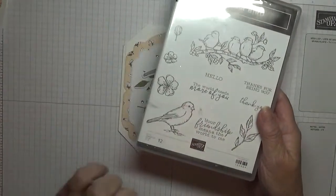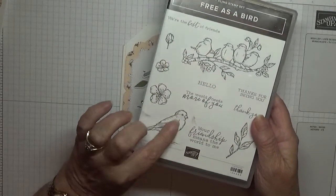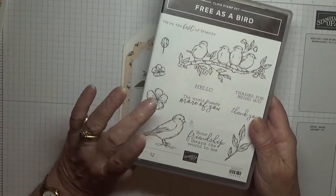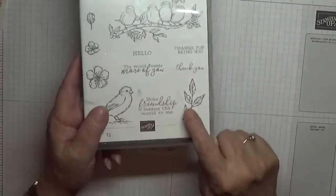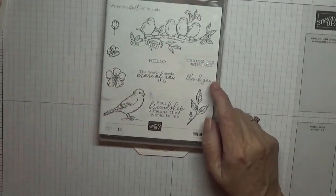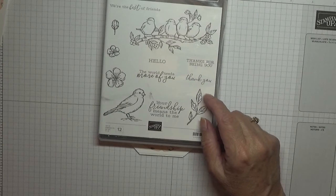To make this card, I am using the stamp set Free as a Bird. I'm going to use that stamp, the two flowers, and the leaf. Now they are already cut out and colored in.